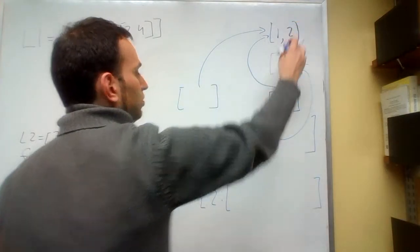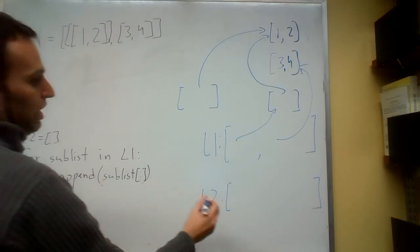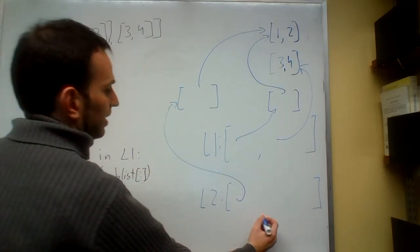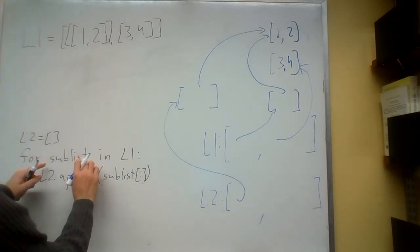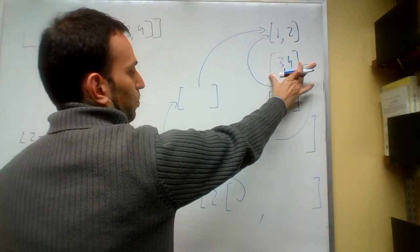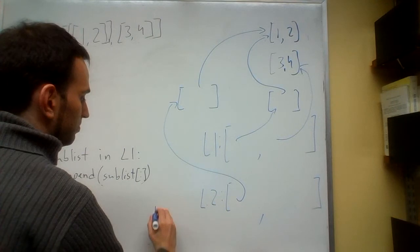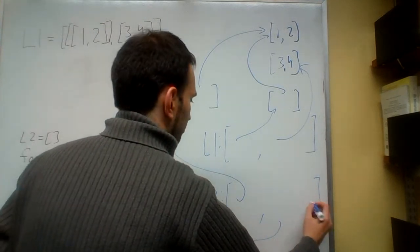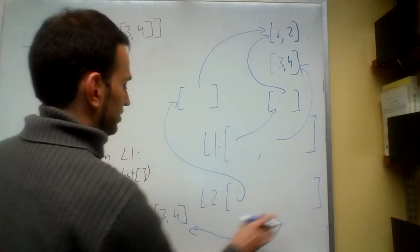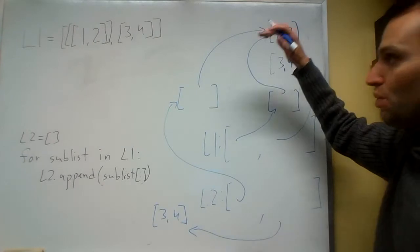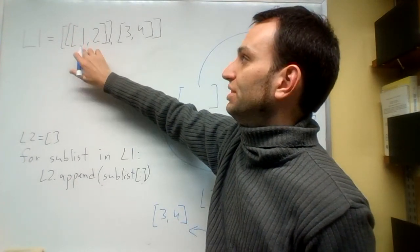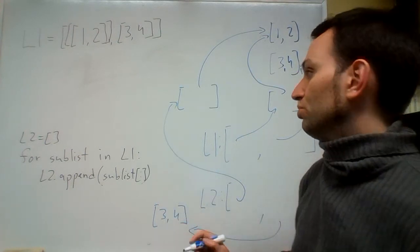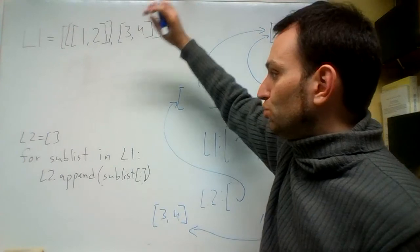Now sublist is 3, 4, so we create another list with the same contents as 3, 4 and place it in L2. You can see that if we were to modify L1 at 0 at 0 at 0, that would affect L2 as well. On the other hand, if we were to modify L1 at 1 at 0, this would not affect L2.